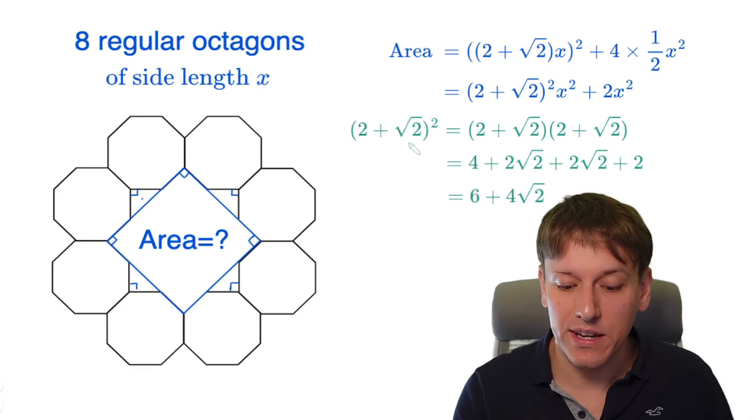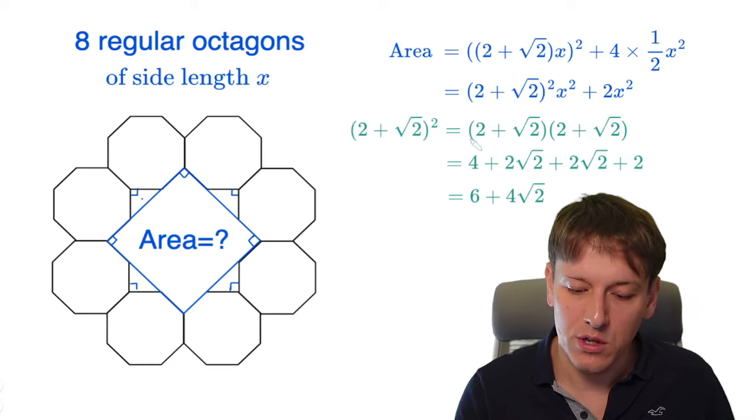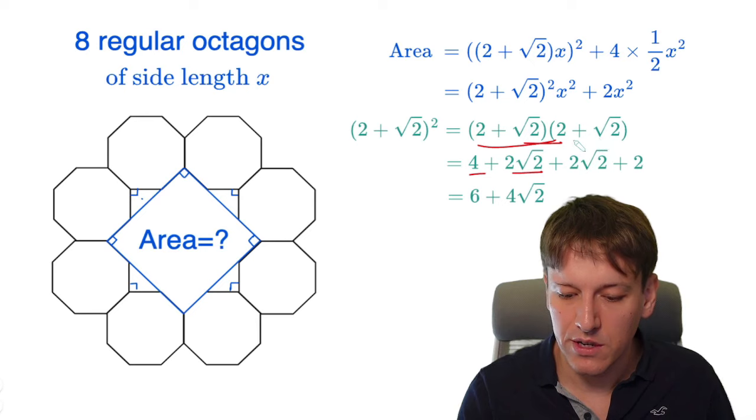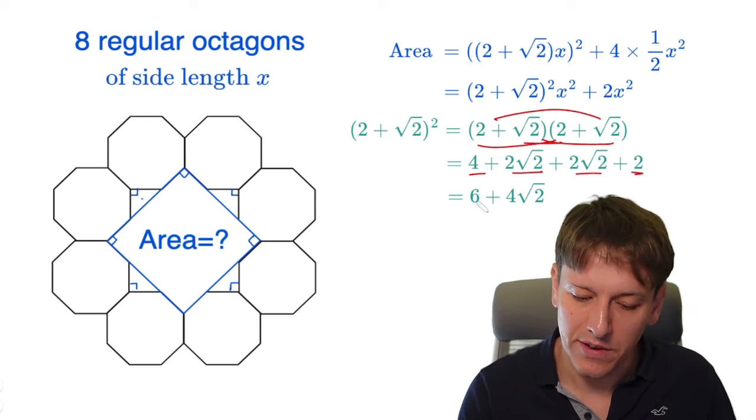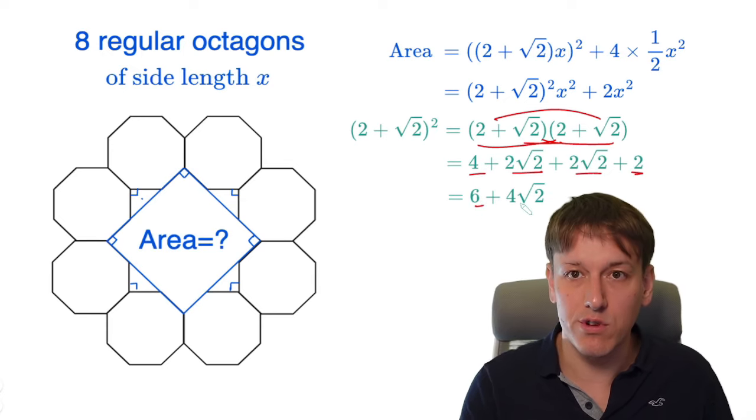Now we just need to be able to multiply out these brackets. So 2 plus root 2 squared is 2 plus root 2 times 2 plus root 2. So I've got 2 times 2 is 4, 2 times root 2 is 2 root 2, another 2 times root 2, and root 2 times root 2 is 2. So if I combine those together, I get 4 plus 2 is 6, and the two 2 root 2s combine to give 4 root 2.